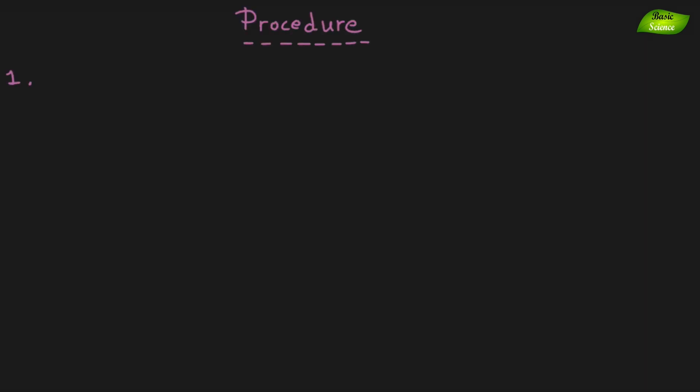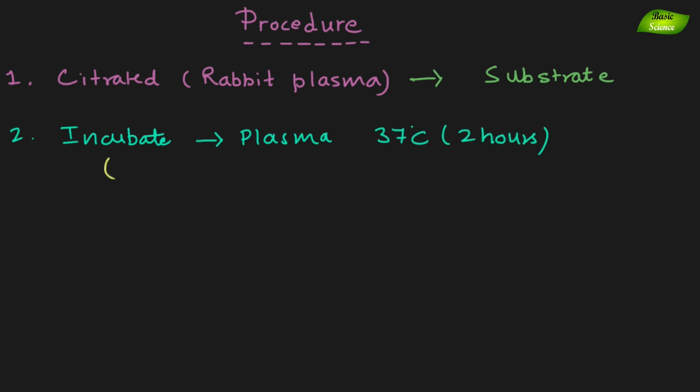Now next is the procedure for this particular test. For procedure, we need plasma, usually rabbit plasma is being used as a substrate for this test. When you add enzyme, you need to incubate the plasma first before adding the enzyme for two hours at 37 degrees to make sure that it's completely free from any contamination.